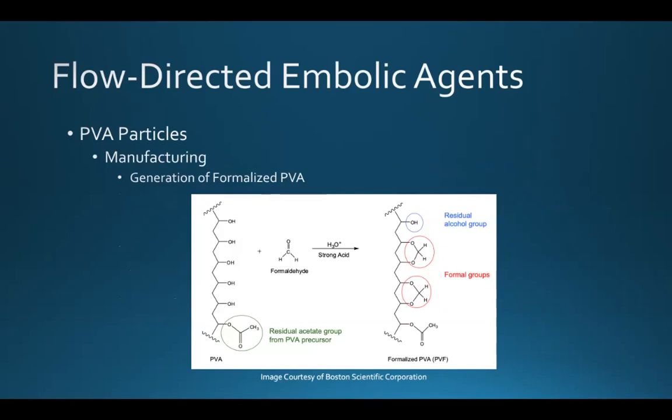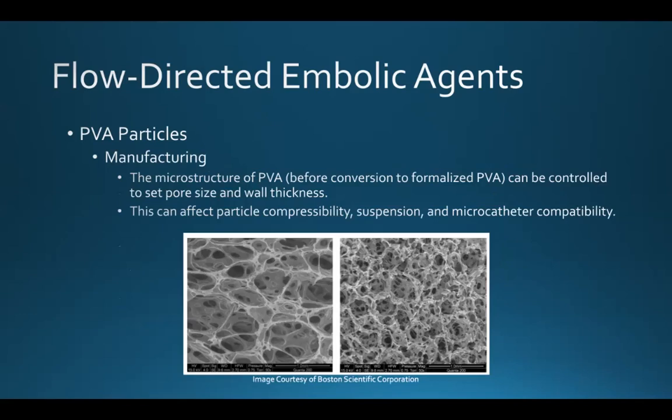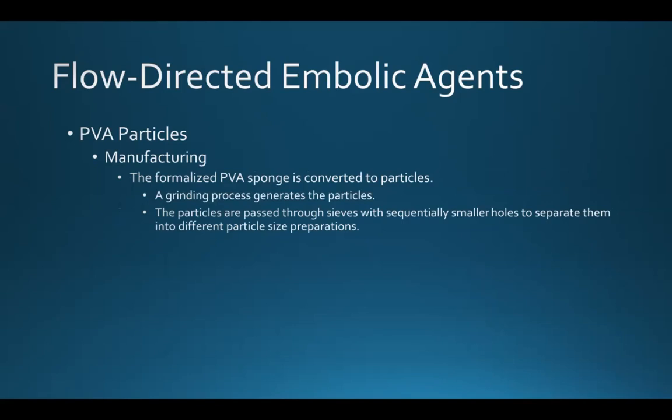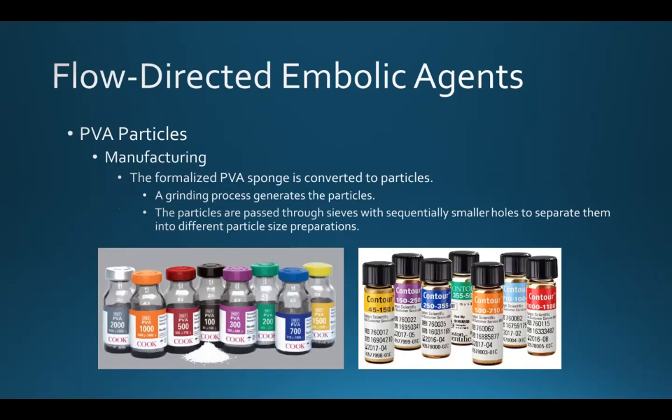There are also several medical applications to PVA, including surgical sponges, wound dressings, surgical cavity packings, and of course embolic agents. The first step in manufacturing PVA is the generation of formalized PVA, which means adding formaldehyde to PVA. The microstructure of PVA can be controlled to set pore size and wall thickness before conversion to formalized PVA, which can affect particle compressibility, suspension, and microcatheter compatibility. Once the sponge is created, it is converted to particles through a grinding process, then passed through a series of sieves with sequentially smaller holes, separating them into different particle size preparations.